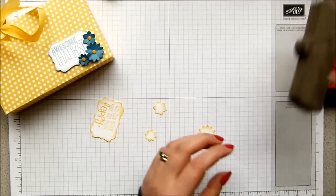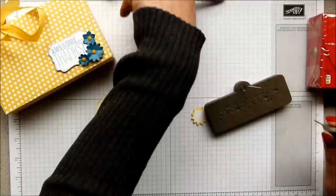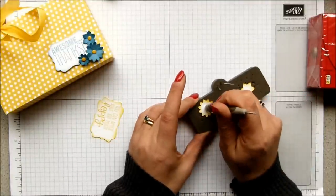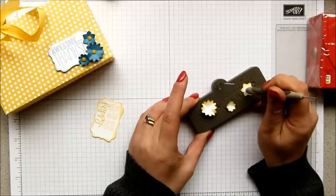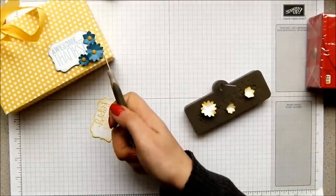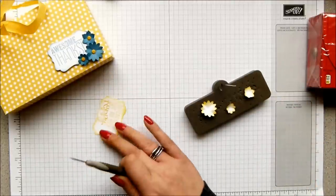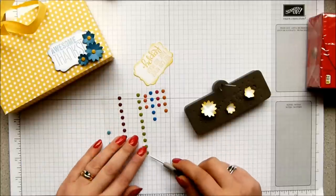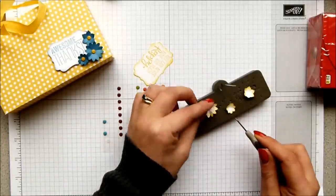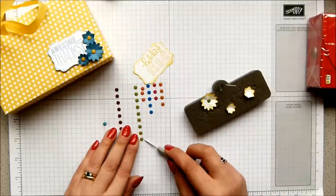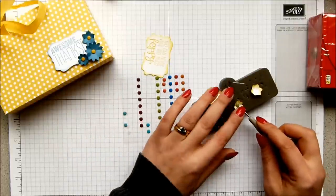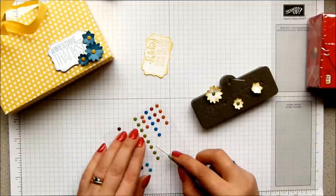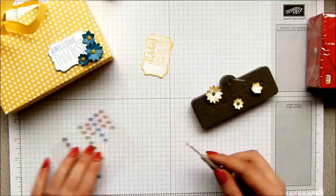Lift those up by using the back of a paper piercer onto my spongy mat. There we go, that's all those lifted. Now this one I put the Daffodil Delight into the flowers, but I've got an excess of Old Olive candy dots, so I'm going to put those ones into these. That's kind of fun, that's quite sweet, isn't it? Not that you would normally have green on the inside of a flower, particularly a daisy type color, but it's okay, it's creative.